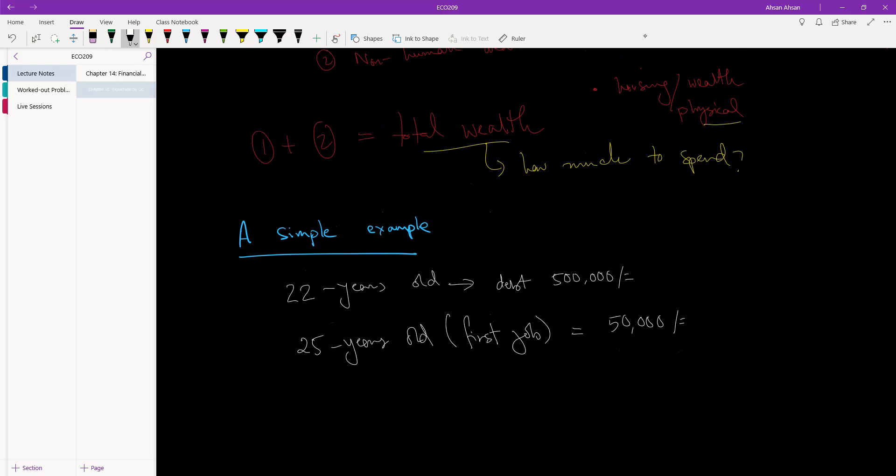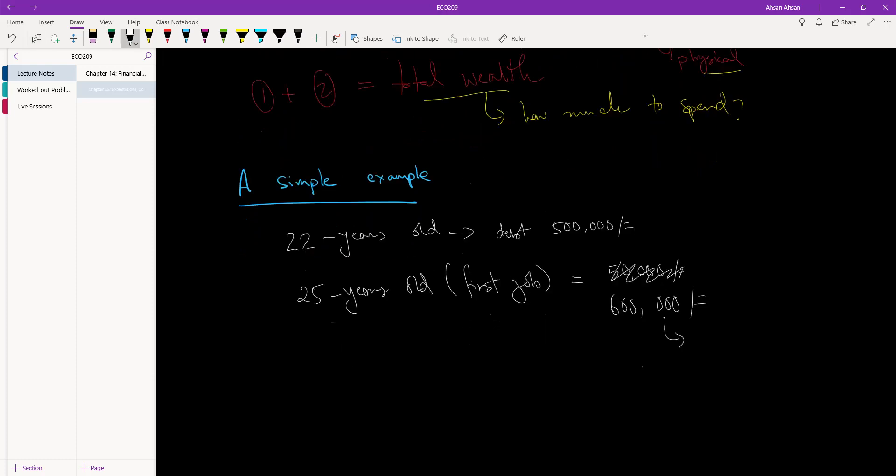Or let's say, let's simplify that and say you're going to earn $600,000 every year. So, that's just $50,000 times 12. And what you also expect is that your income is going to go up by 5% every year. So, 5% annual increment.